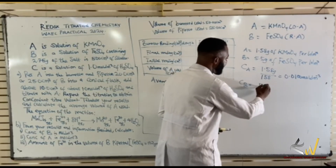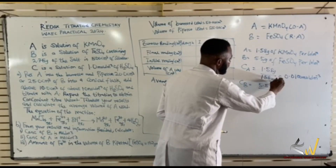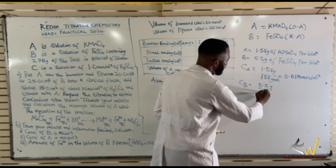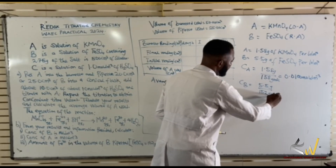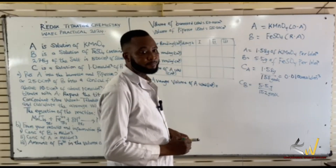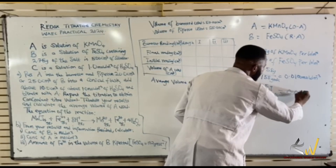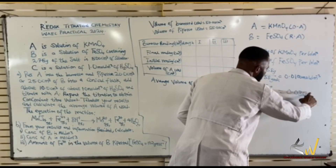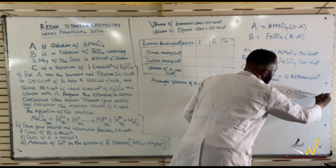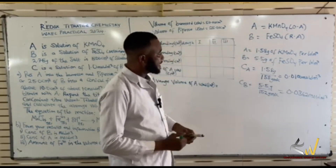The concentration of B: 5.5 grams divided by 152 grams per mole gives us approximately 0.0362 mol/dm³.